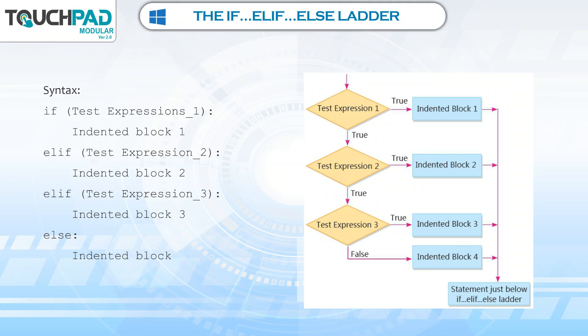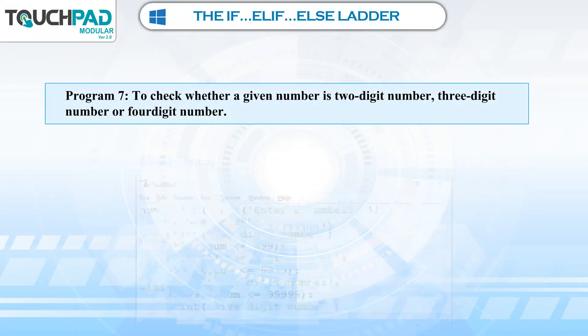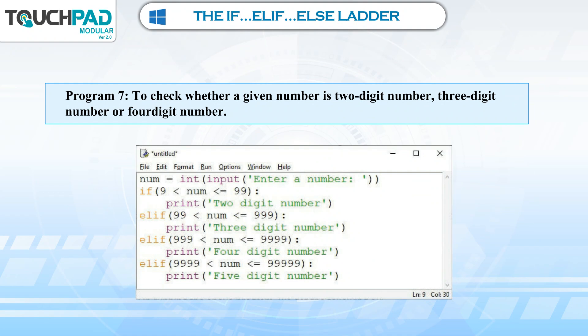If test expression 1 is true, then go to statement 1, followed by the statement just below the if-elif-else ladder. If test expression 2 is true, then go to statement 2, followed by the statement just below the if-elif-else ladder. If test expression 3 is false, then the body of else is executed, followed by the statement just below the if-elif-else ladder.